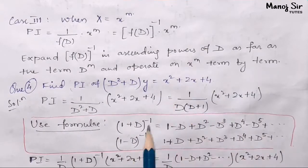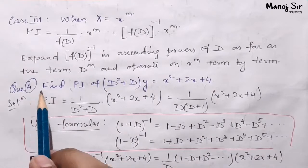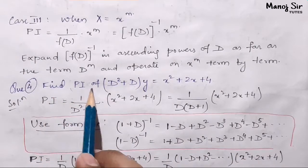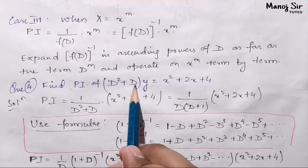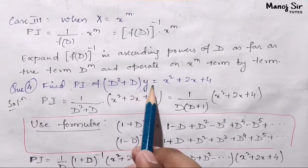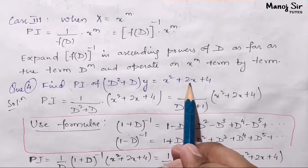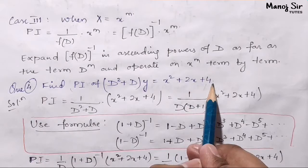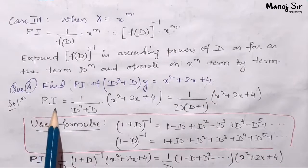Let us see with an example. The question says: find the PI of (D² + D)y = x² + 2x + 4.